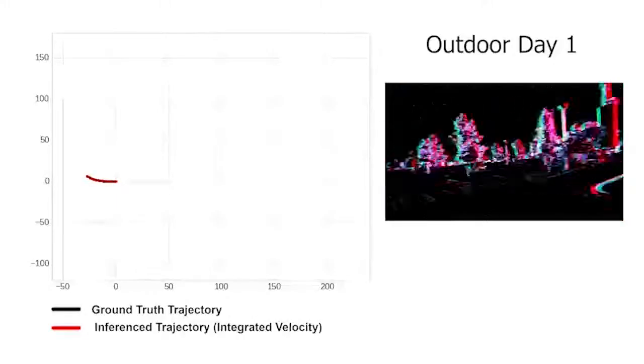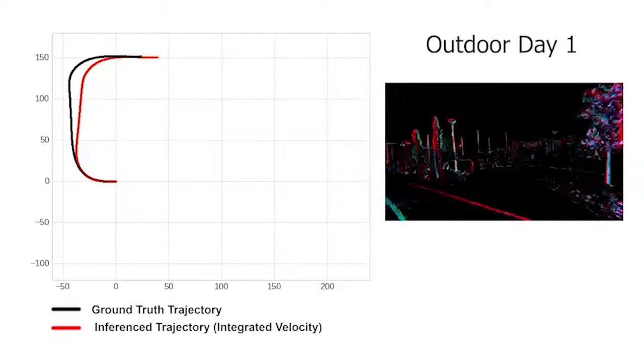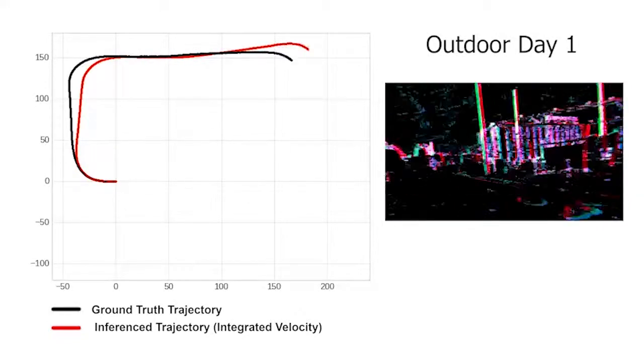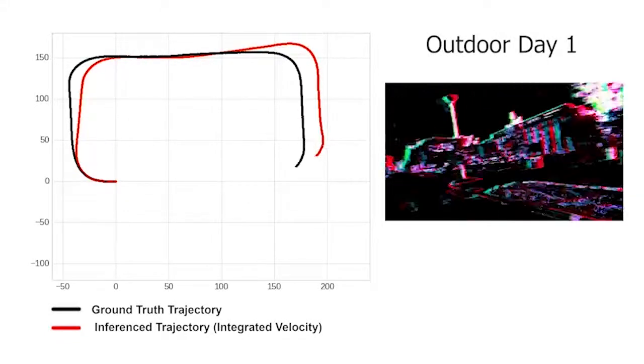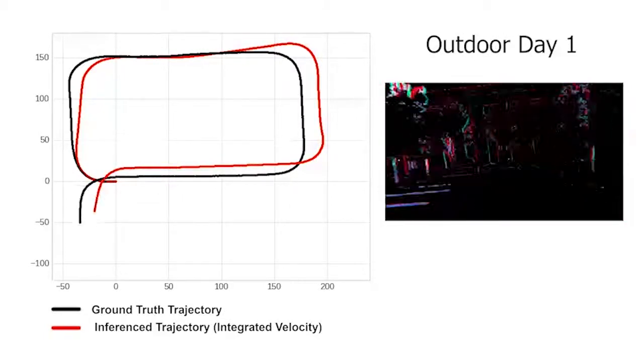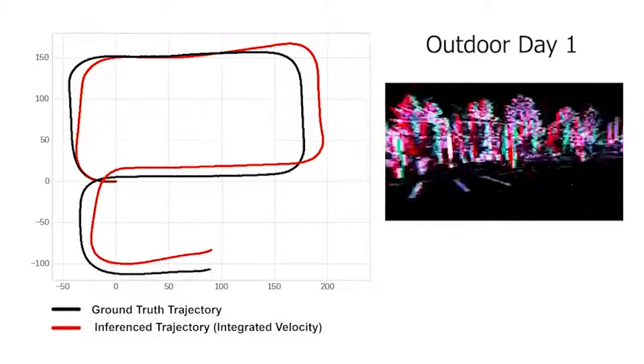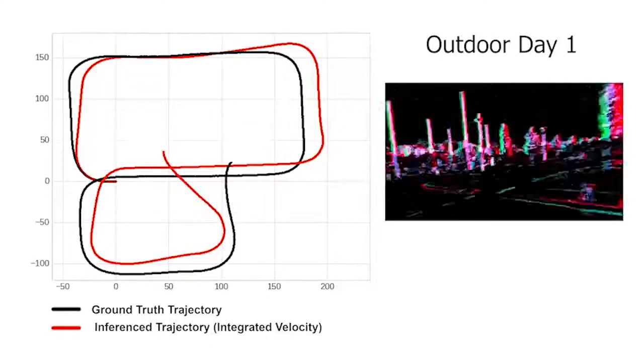We integrate the predicted velocities to reconstruct the full car trajectory and demonstrate our results on one of the sequences. We observe a relatively small drift between the estimated trajectory in red and the ground truth in black.